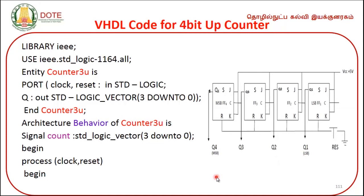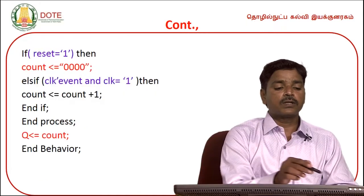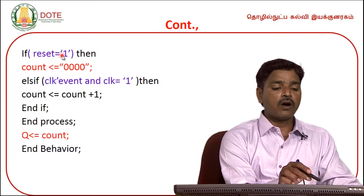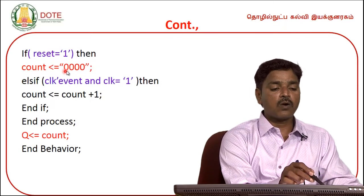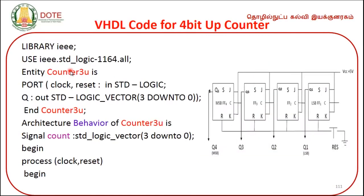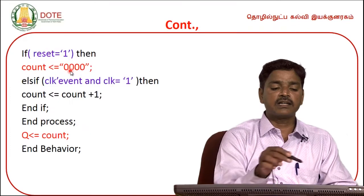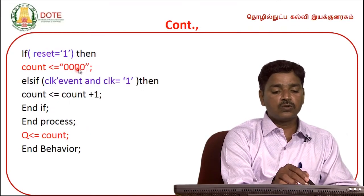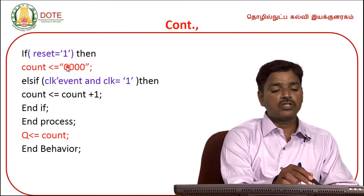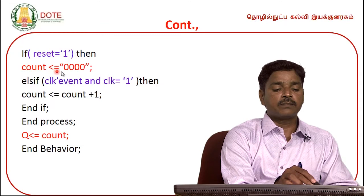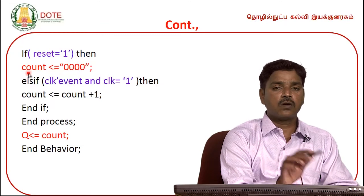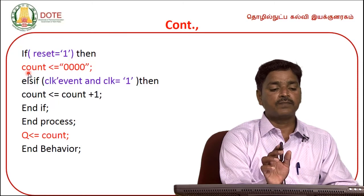When reset equals 1, the count output is assigned: count <= "0000"; — this is the assignment operator. This sets all outputs to zero, representing the initial counter output.